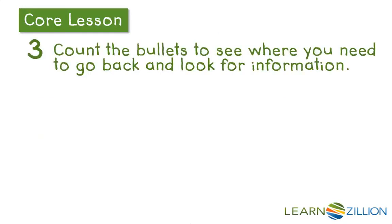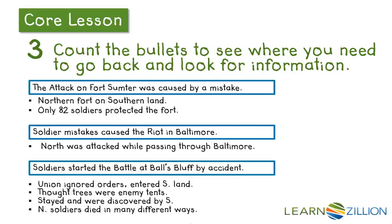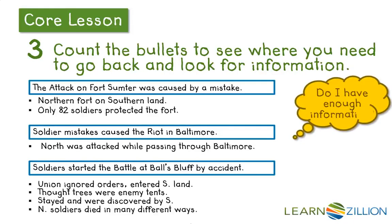Third, count the bullets to see where you need to go back and look for information. Looking at my body outline, I'll look at this first box and ask: do I have enough information? In this first box I've got two bullet points, and two bullet points is enough information to write about. Anything less than two is probably not enough.